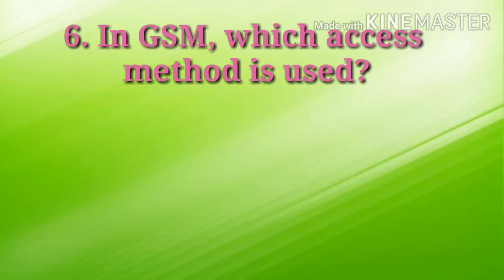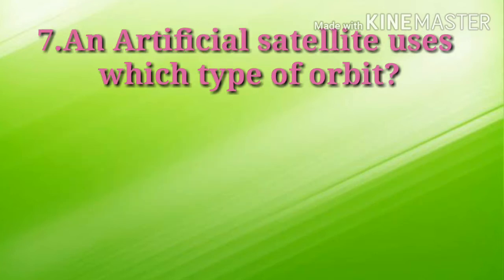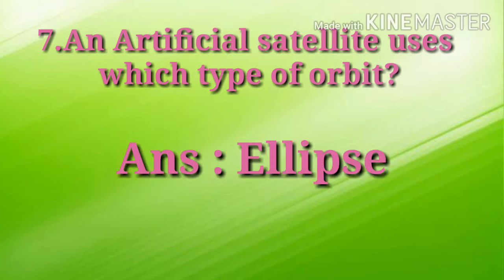The next question is: in GSM, which access method is used? GSM is Global System for Mobile, and the access method used is TDMA — Time Division Multiple Access. The next question is: an artificial satellite uses which type of orbit? The answer is ellipse — an artificial satellite uses an elliptical orbit.